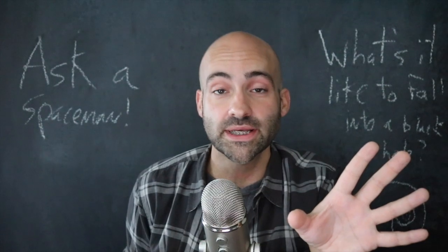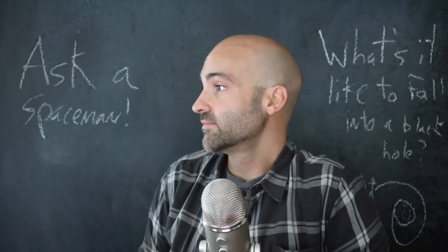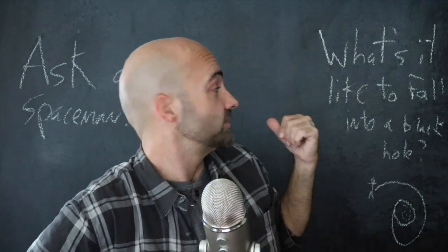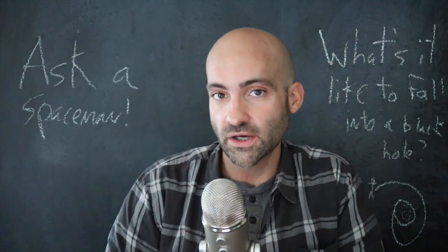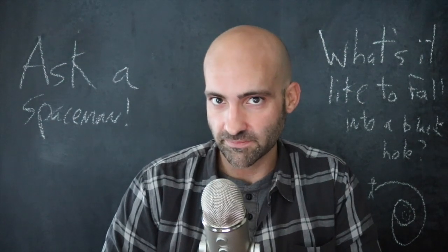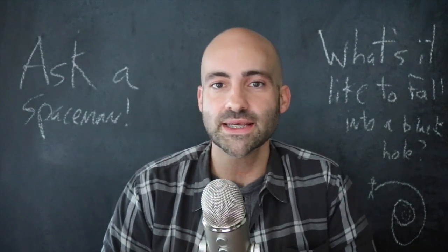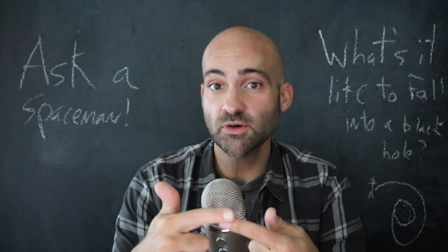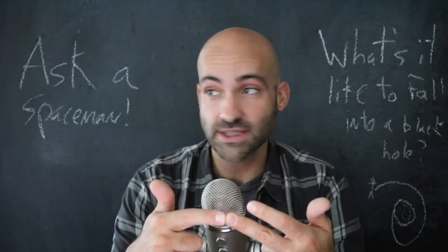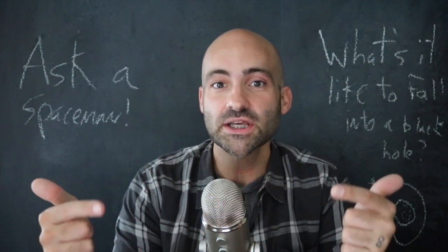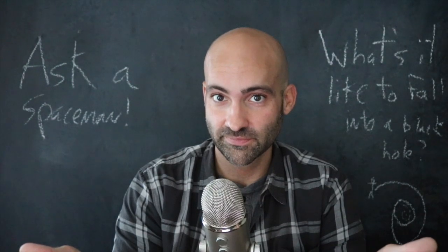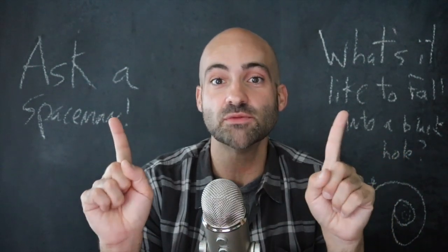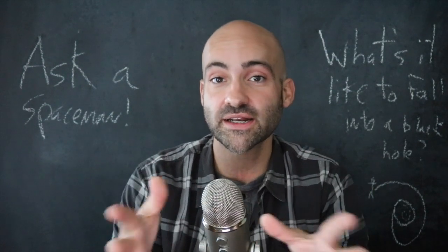Everywhere you turn is singularity — go this way, singularity; turn around, singularity is back there too. Everywhere you try to go, the singularity is in front of you. Inside a black hole you can't stay still; you must move, and the singularity is in all directions. All paths inside a black hole end at the singularity, and since you must keep moving, you will reach it in a finite amount of time.